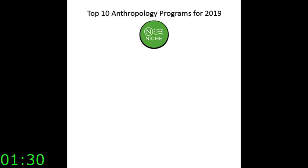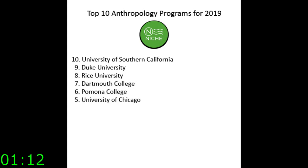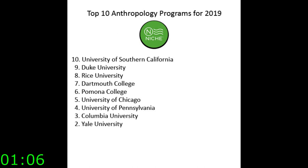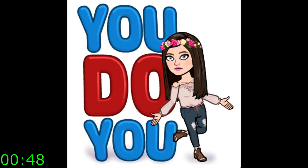If you think about entering a field of anthropology, the following are the top 10 anthropology programs in the US for 2019, according to niche.com: Number 10, University of Southern California; 9, Duke; 8, Rice University; 7, Dartmouth College; 6, Pomona College; 5, University of Chicago; 4, University of Pennsylvania; 3, Columbia University; 2, Yale; and 1, Harvard. Although these schools can come at a price tag, I'm not saying that to deter you. My tuition was only about $9,000 to $10,000 and I graduated with less than $30,000 in debt. You don't have to go to a private school to get a good education, but if that's what you want to do, you do you.